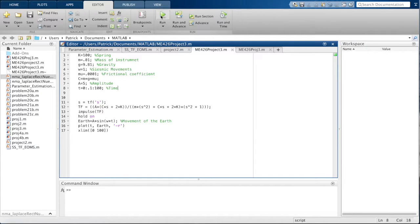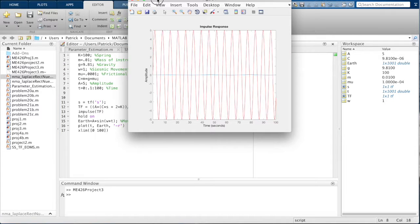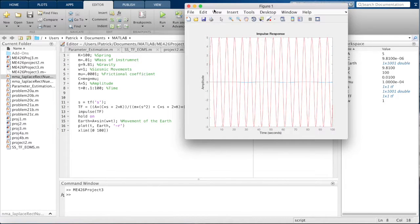We assume the earth's motion to be A sine omega t. When looking at the graph, we see the red line as the earth's motion and the blue line is from the transfer function. This means the device is staying still and the frame is moving at the same rate as the earth, because the device is mounted to the earth.